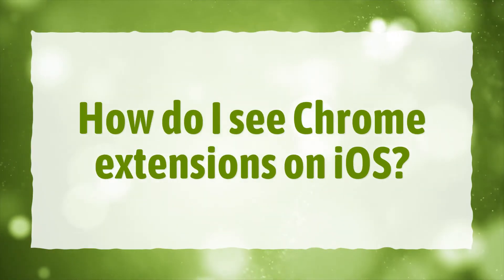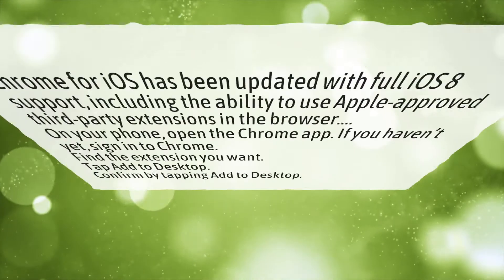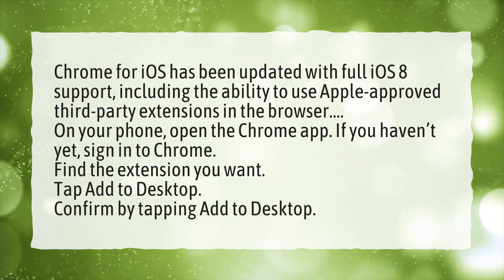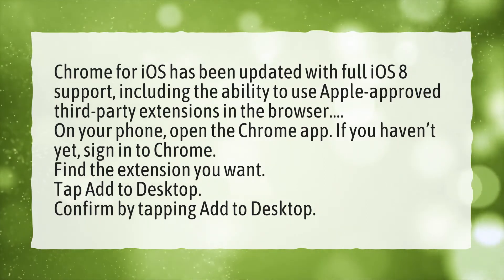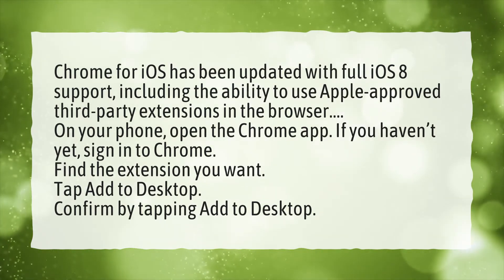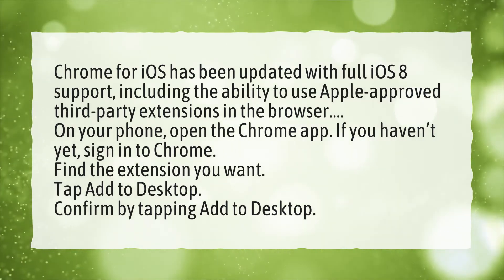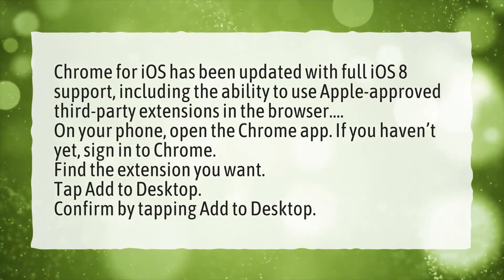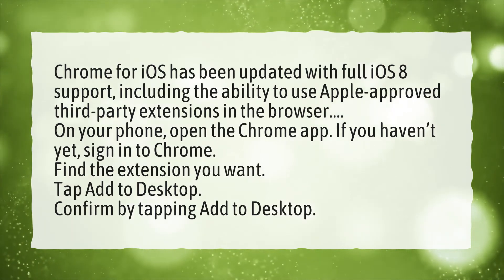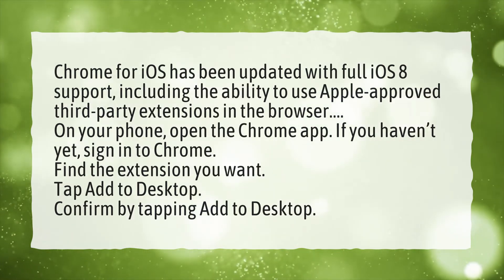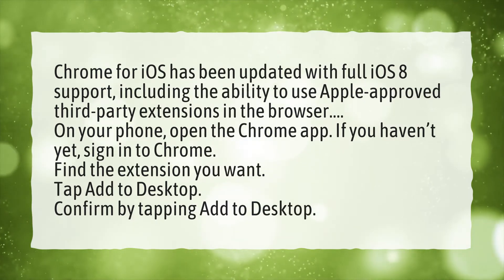How do I see Chrome Extensions on iOS? Chrome for iOS has been updated with full iOS 8 support, including the ability to use Apple-approved third-party extensions in the browser. On your phone, open the Chrome app. If you haven't yet, sign in to Chrome. Find the extension you want. Tap Add to Desktop. Confirm by tapping Add to Desktop.